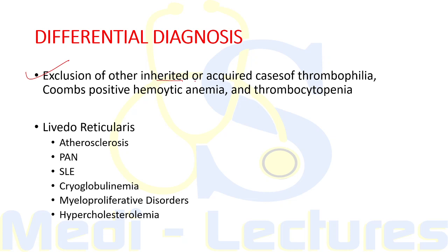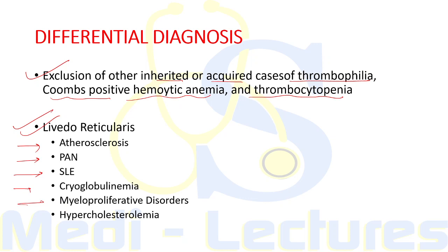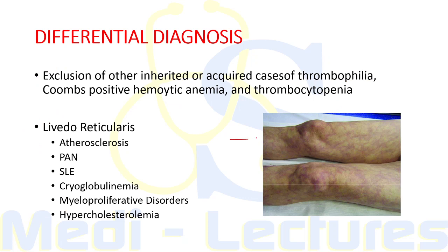In the differential diagnosis, other inherited or acquired causes of thrombophilia, Coombs-positive hemolytic anemia, and thrombocytopenia must be excluded, as these are all seen in APS. Other conditions where livedo reticularis can be seen include atherosclerosis, polyarteritis nodosa, SLE, cryoglobulinemia, myeloproliferative disorders, and hypercholesterolemia. Livedo reticularis presents as a mottled reticular vascular pattern with purplish discoloration of the skin, caused by swelling of venules due to capillary obstruction by thrombus.